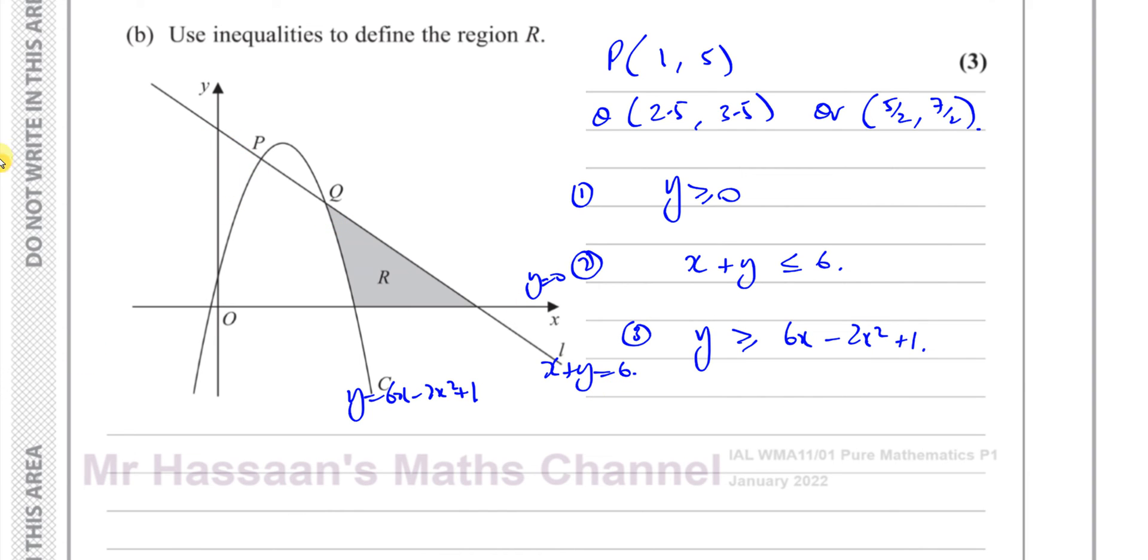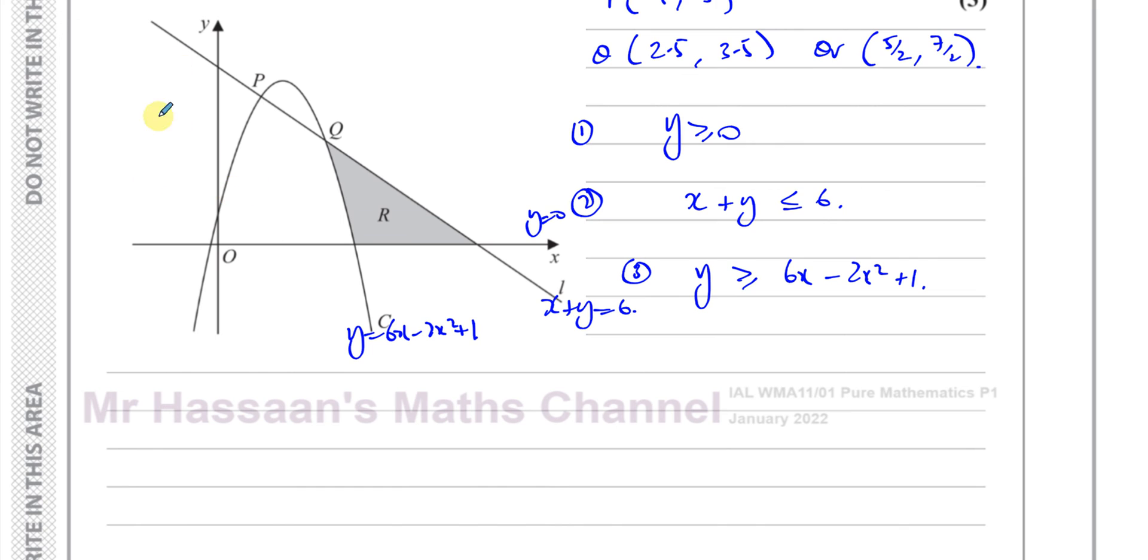So we have to eliminate this from our answer. We have to mention, for example, we could say x is greater than or equal to this value of Q, which was 2.5. That was one, yeah. So x ≥ 2.5.